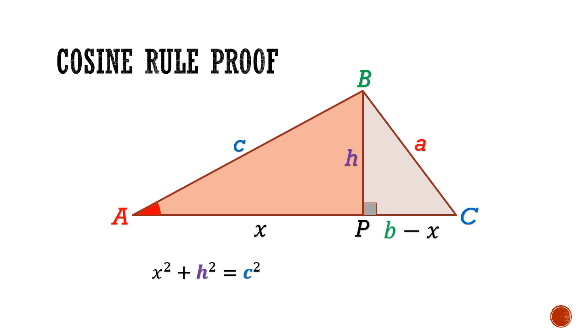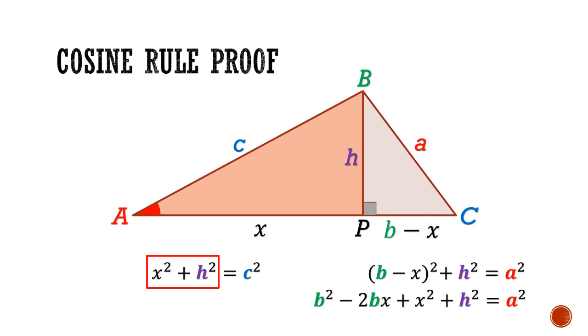This will give me x² + h² = c² as well as (b - x)² + h² = a². And for this second application of Pythagoras theorem, I'm going to expand and get b² - 2bx + x² + h² = a². Notice that x² + h² is common in both sets of equations. This allows me to perform a substitution, giving me b² - 2bx + c² = a².